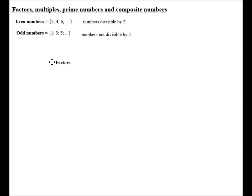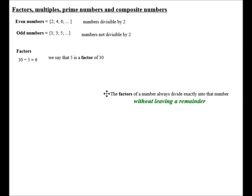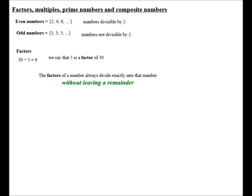Let's look at Factors. If we say 30 divided by 5, the answer is 6. We therefore say that 5 is a factor of 30. 6 would also be a factor of 30. The Factors of any number always divide exactly into that number without leaving a remainder.